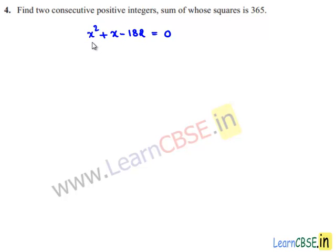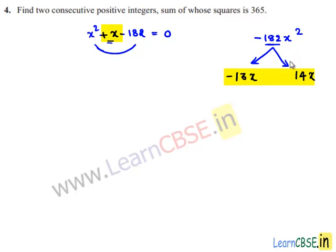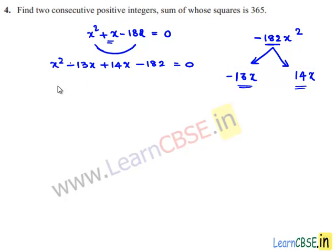The product of the first and last terms is minus 182x squared. We need two terms whose product equals minus 182x squared and sum equals plus x. Taking minus 13x and plus 14x: minus 13x times 14x is minus 182x squared, and minus 13x plus 14x is plus x. So minus 13x and plus 14x satisfy both conditions. Replace x with minus 13x plus 14x, minus 182 equals 0.